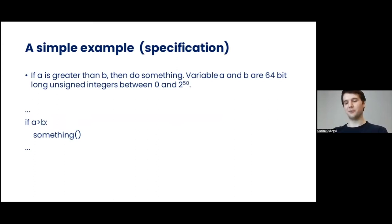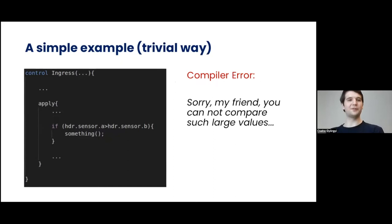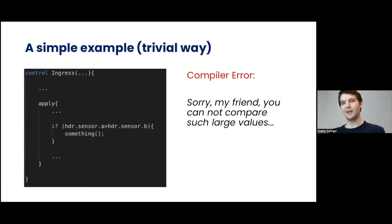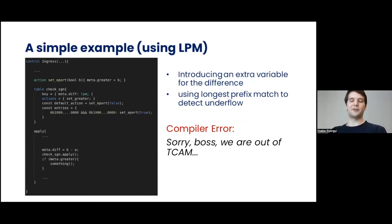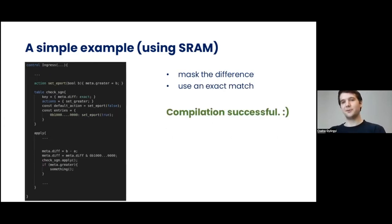The trivial implementation would be to use an if statement. However, depending on the target, we might get an error saying we cannot compare such large values on this target. No problem — we introduce an additional variable, subtract A from B, and check for an underflow with a longest prefix match. But longest prefix match uses TCAM, which is a very expensive and scarce resource, so the compiler might say we are out of TCAM. Still not done — we do the masking part of the longest prefix match manually, then check for underflow using an exact match, and finally our program compiles.